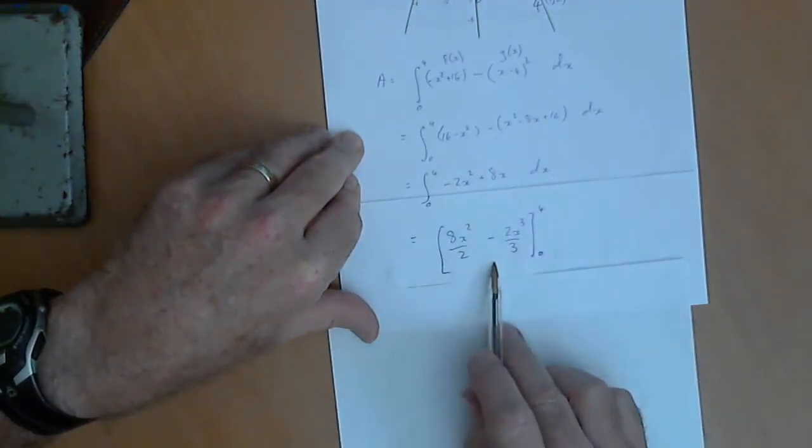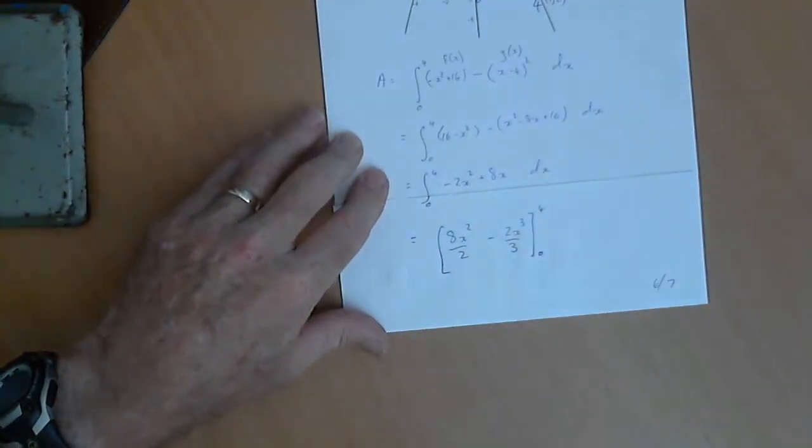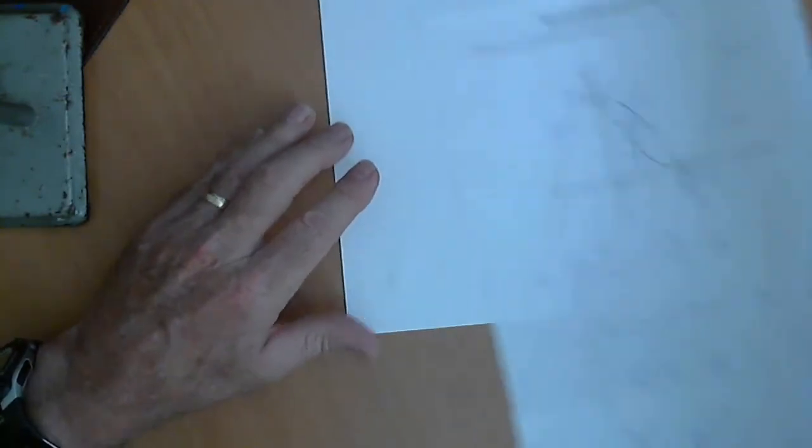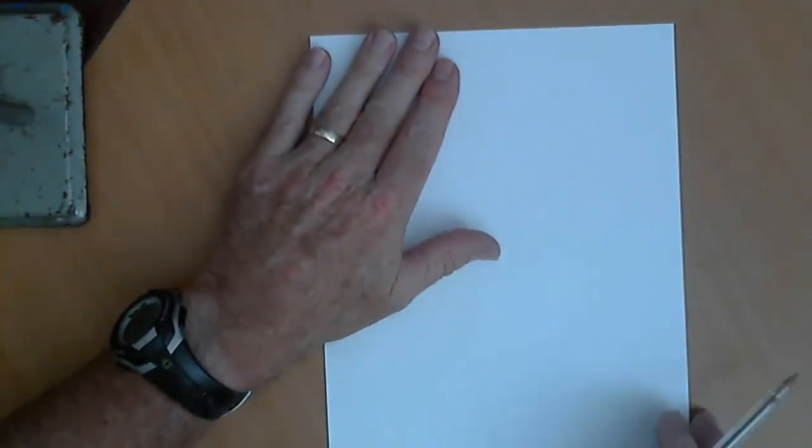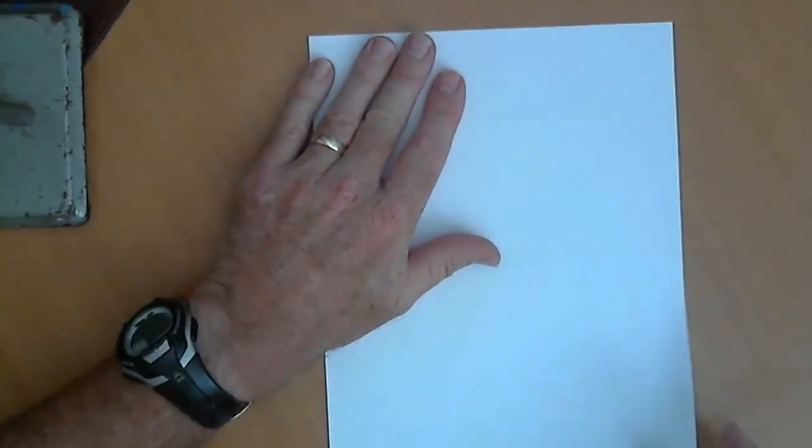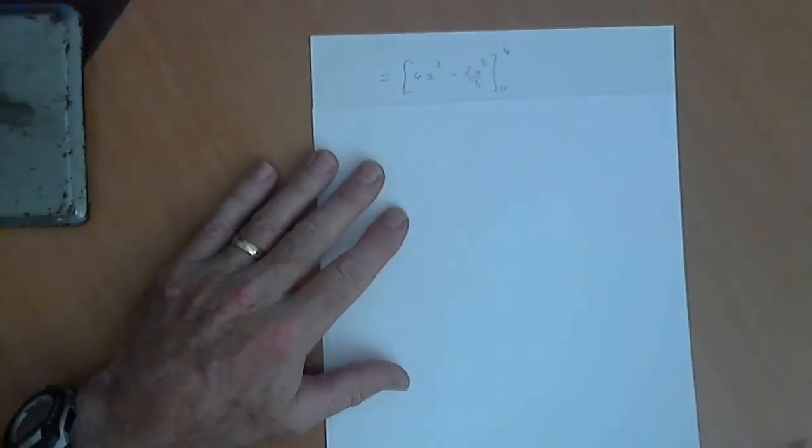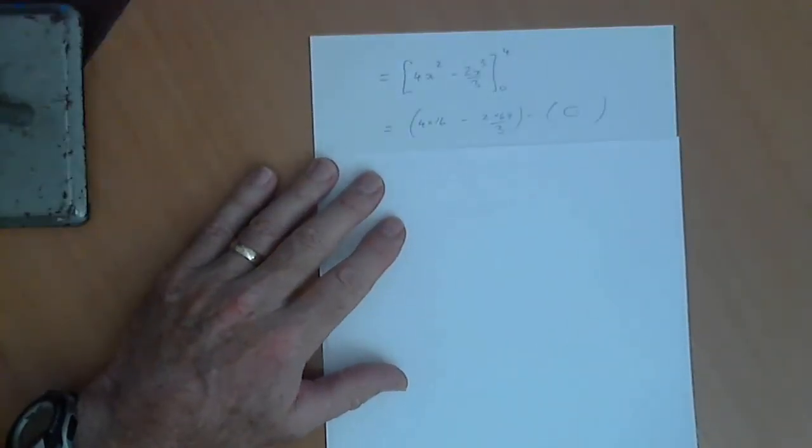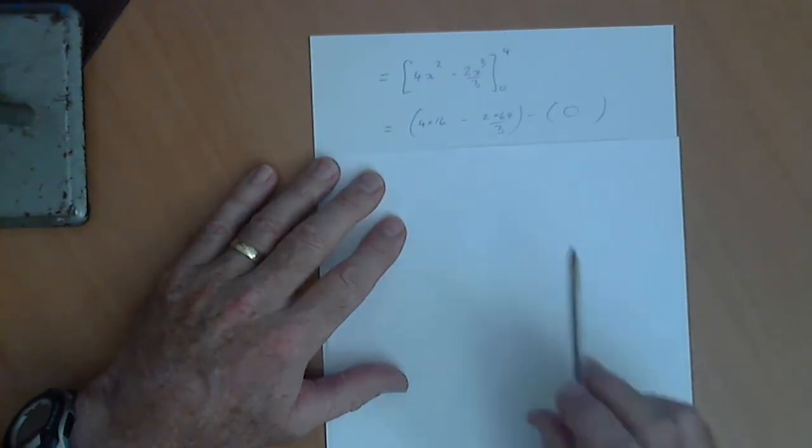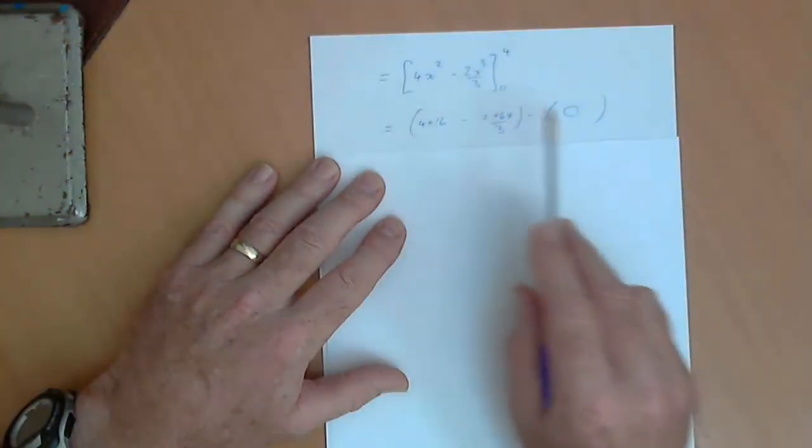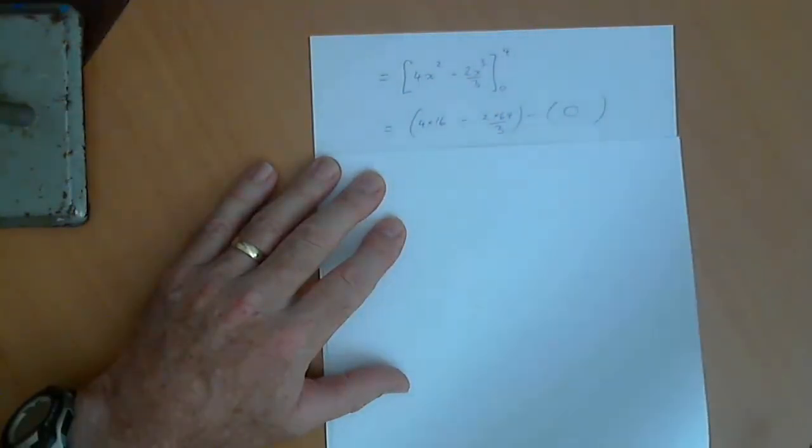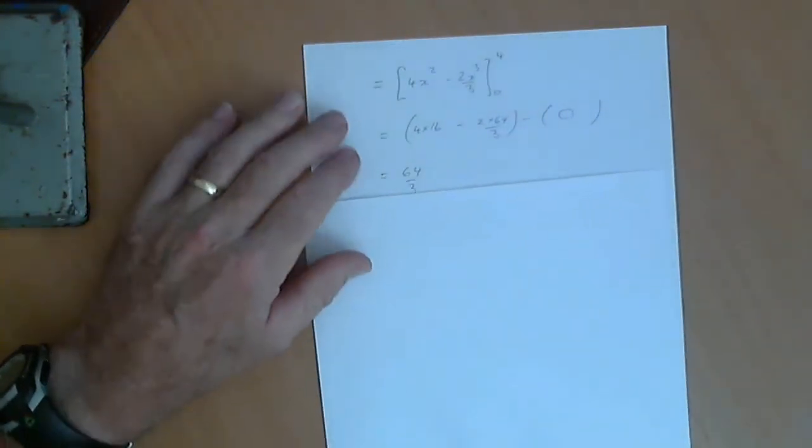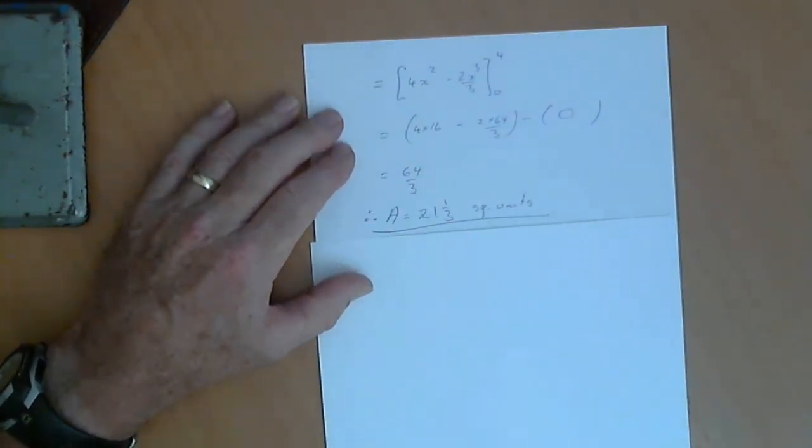Find the primitive function of that. Then we'll simplify that. Substitute in the 0 and 4, and because there's x in both expressions, that bracket will just end up being 0. Then you end up with 64 on 3, or 21 and 1 third square units.